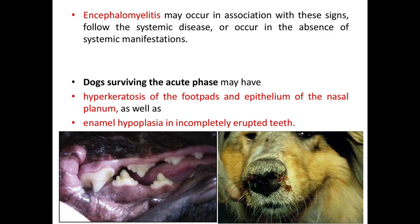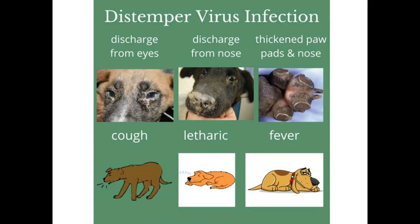Encephalomyelitis may occur in association with these signs, following the systemic disease, or occur in the absence of systemic manifestations. Dogs surviving the acute phase may have hyperkeratosis of foot pads and the epithelium of the nasal planum, as well as enamel hypoplasia in incompletely erupted teeth. Clinical signs of canine distemper virus infection include discharge from eyes, discharge from nose, thickened foot pads and nose, cough, lethargy, and fever.